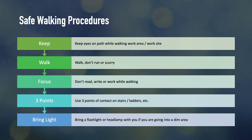Safe working procedures include keeping eyes on the path at all times while walking — an old Equinor saying. There's no need to run, hurry, or scurry to where you're going. Don't read, write, or use your phone while walking, even if you have a lot of messages to check between point A and point B. Use three points of contact on stairs, ladders, and especially when getting out of equipment. Bring a flashlight or intrinsically safe headlamp if you're going into a dim area — keep one handy in your truck door.